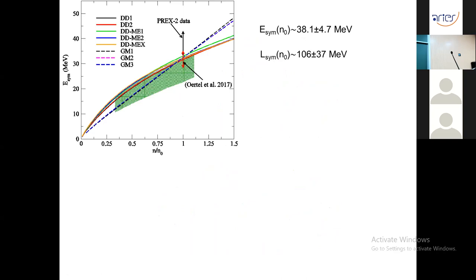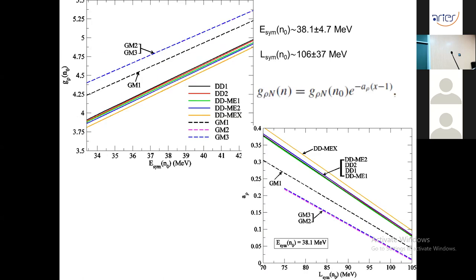The most recent nuclear skin thickness measurement from the PREX-2 experiment indicates a completely different range of e-sim and l-sim, with entirely different values of e-sim at nuclear saturation density (shown by the black vertical line; the red line shows the earlier estimate). Existing parameterizations are not compatible with these recently obtained values. To meet this new range of e-sim and l-sim, the rho-meson coupling parameters are recalibrated for various equations of state. The new estimated range of e-sim and l-sim is higher than the previously accepted values.